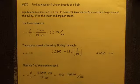The pulley has a radius of 13.1 centimeters. It takes 19 seconds for 61 centimeters of belt to go around the pulley. Find the linear and angular speed. All right.